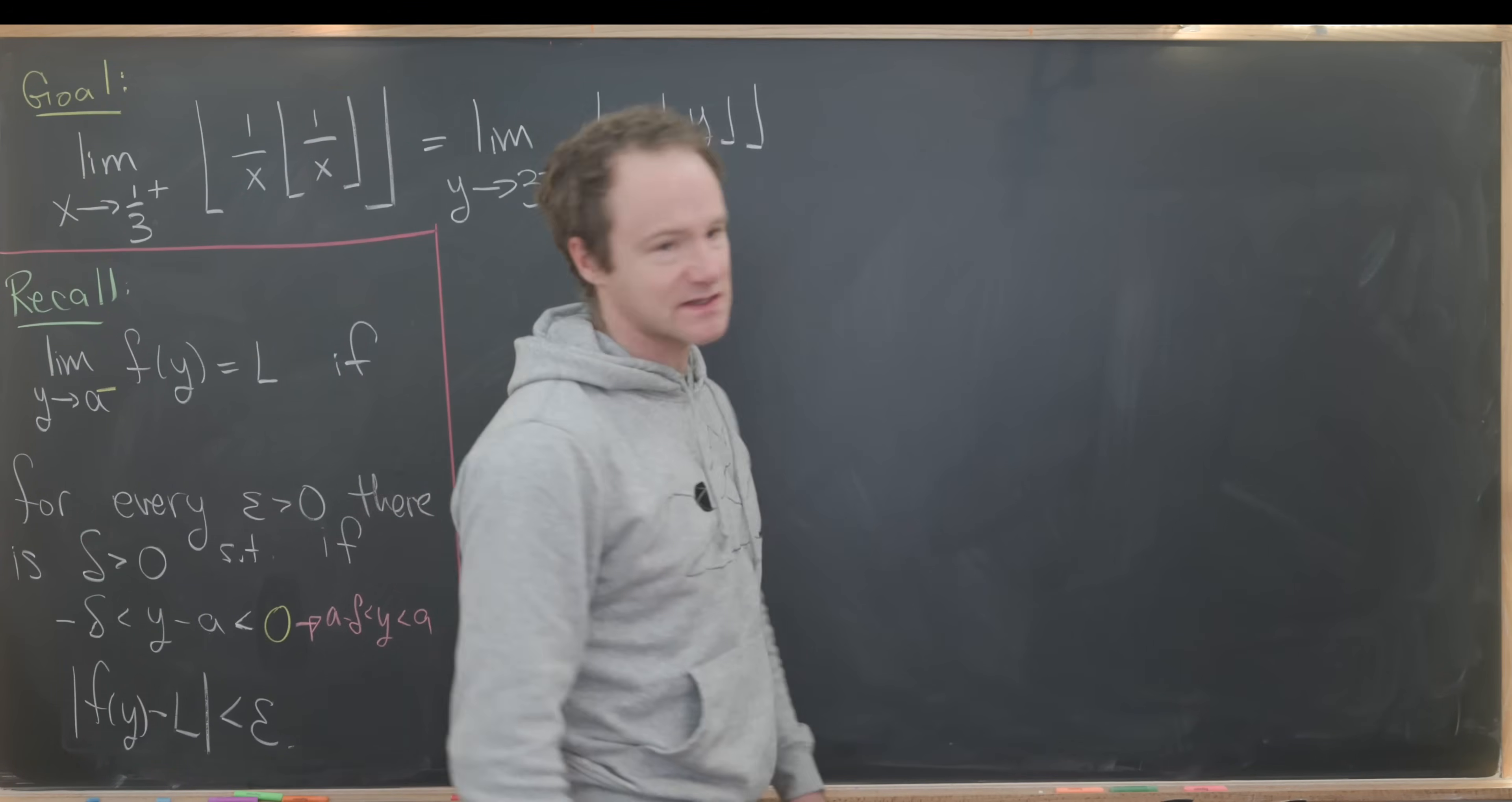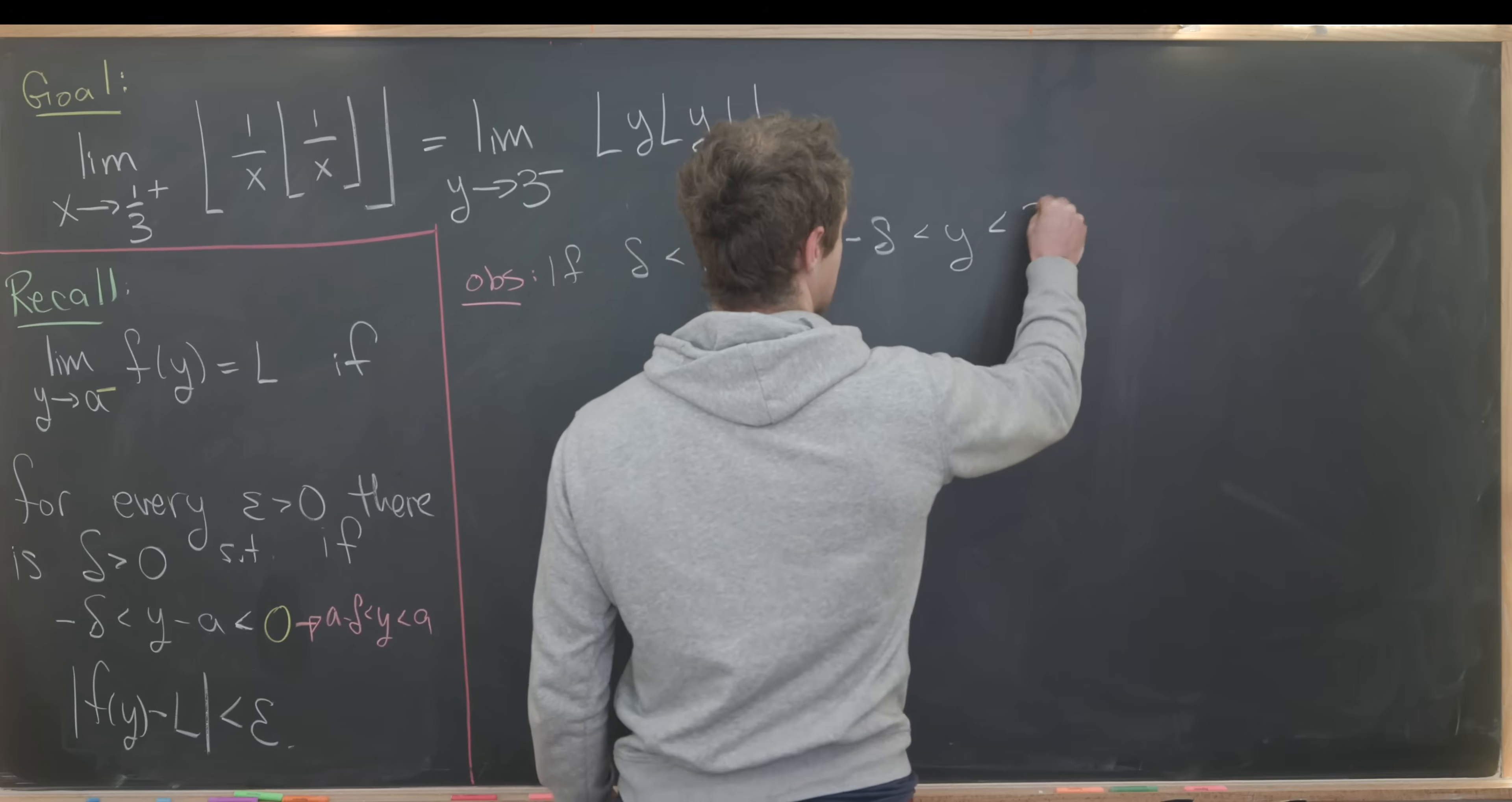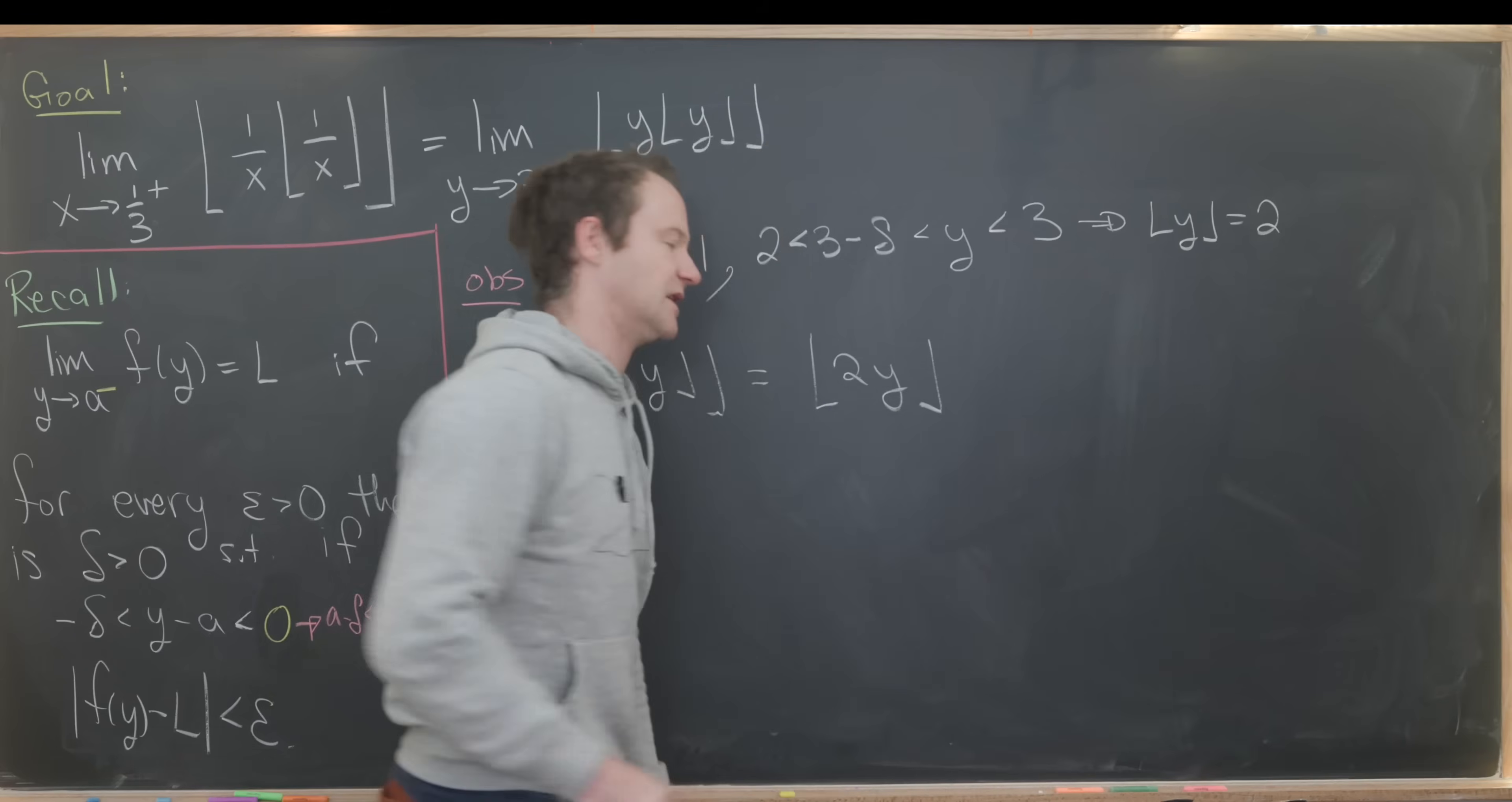Now let's explore this a little bit before we look at a precise solution. Let's start with the following observation. If our delta is less than 1, then with our a value of 3, we have 3 minus delta is less than y, which is less than 3. But we can put on the side of this 2. That means y is between 2 and 3, which tells us that the floor of y is equal to 2. That tells us that the floor of y times the floor of y is equal to the floor of 2 times y.